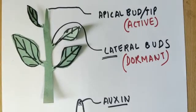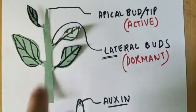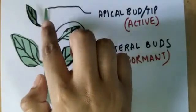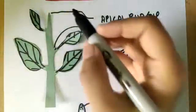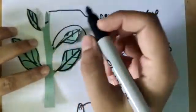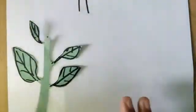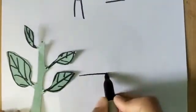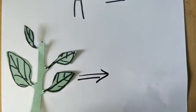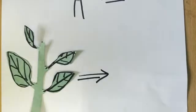So what would happen if I remove this production center of auxin? If I remove the production center of auxin, that means no more auxin is being produced. That means there is no one who could now stop these lateral buds from growing.